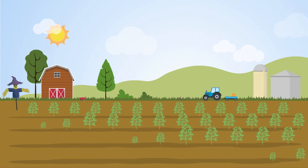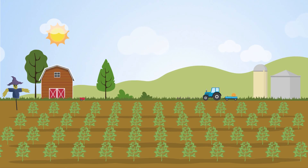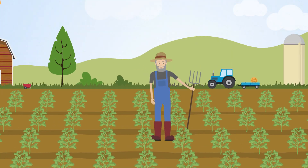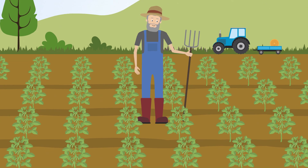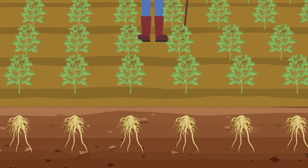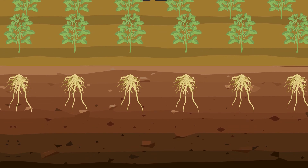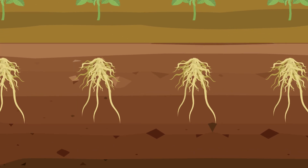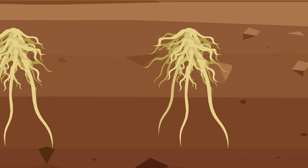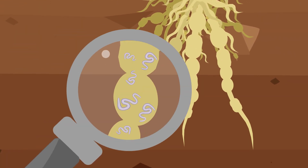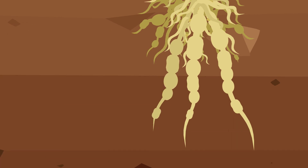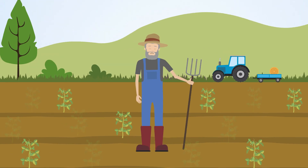Soybean is one of the most important grain crops in the United States. In the southern U.S., many farmers grow soybean on land previously cropped only to cotton. Many cotton-associated pathogens impact soybean, in particular the southern root-knot nematode. This nematode can inflict severe damage to soybean, resulting in significant yield loss.